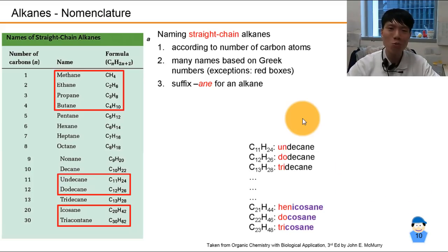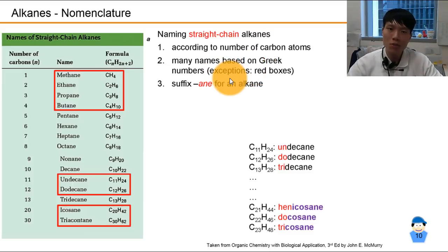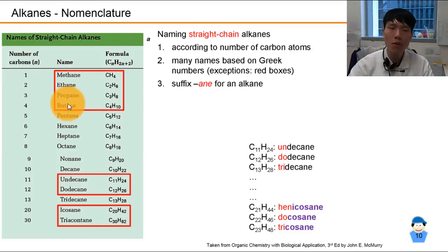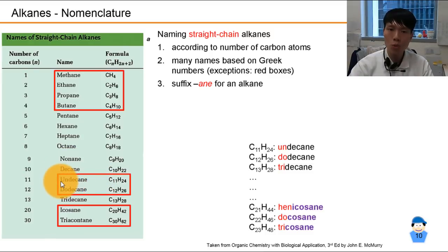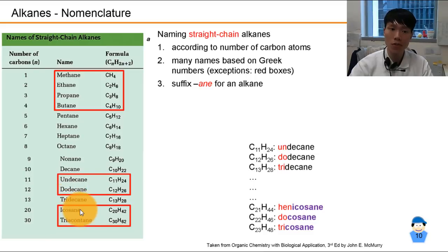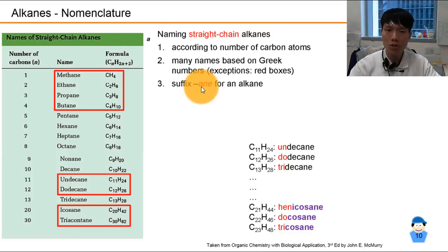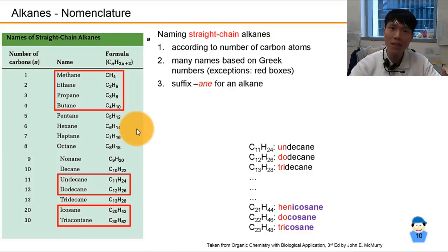How do we name straight chain alkanes? We first look at the number of carbon atoms in the chain, and we name them based on Greek and Latin number prefixes — except those in red boxes. One carbon is meth-, two is eth-, three is prop-, four is but-, five is pent-, six is hex-, seven is hep-, eight is oct-, nine is non-, ten is dec-, eleven is undec- (uni means one, one plus ten), twelve is dodec-, thirteen is tridec-, and so on. You have to learn until thirteen in your syllabus. We end with the suffix -ane because it represents the alkane family. So for example, hep- for seven carbons plus -ane gives heptane.